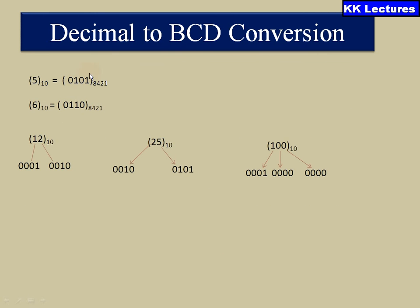To convert a decimal to BCD, it is very simple — just express each digit in 4-bit binary. For example, 5 can be expressed as 0101, which itself shows that it is a BCD code.